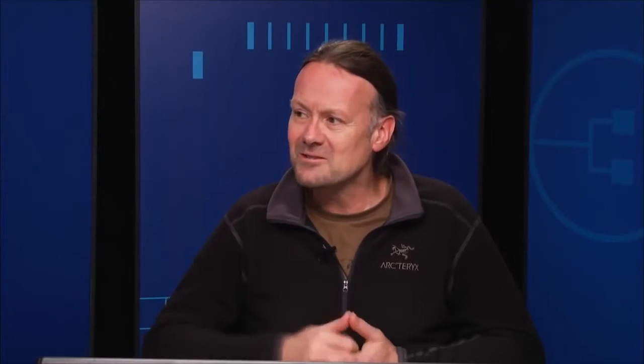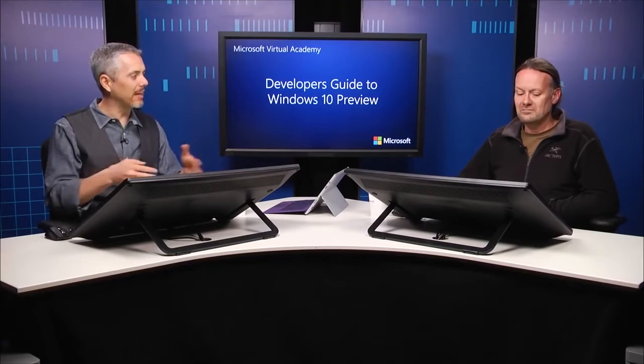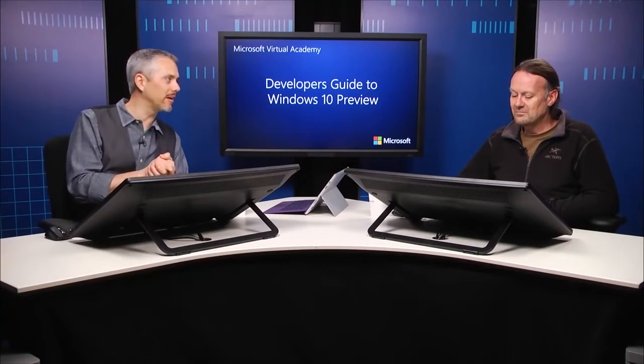Before that, we used to have our Express edition versions, which were free and loved by many developers. There were different Express SKUs for web and mobile, and they were great. They're still around. But with Community, you can open every project and you get the Professional Edition with all those great tools. Web development? Community Edition. XAML development? Community Edition. Phone development? Community Edition. You interact with Visual Studio Online? Community Edition. If you're an independent developer, a hobbyist, or a small team — though there are some restrictions for very large Fortune 500-style companies — get it for free.